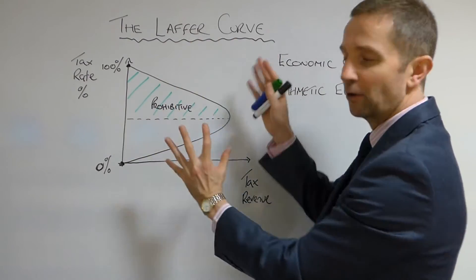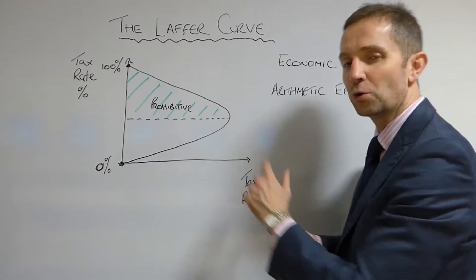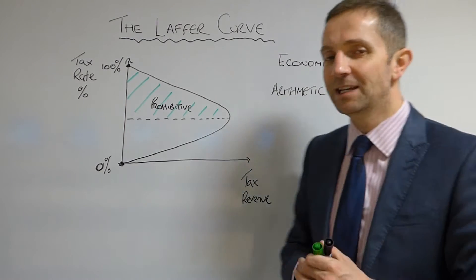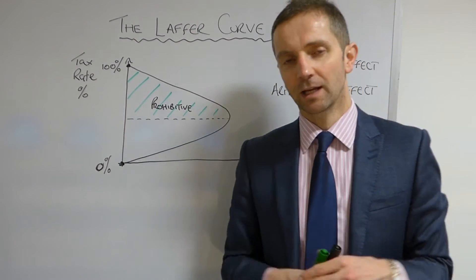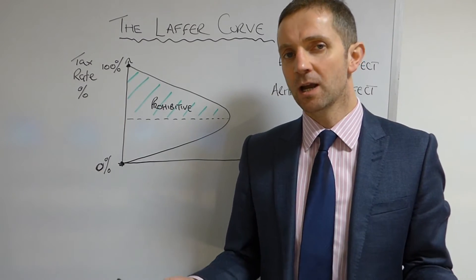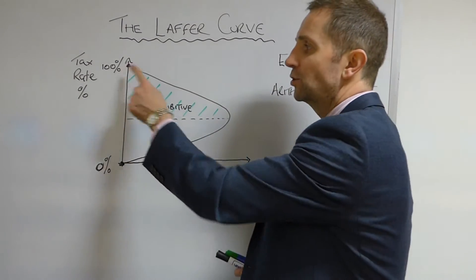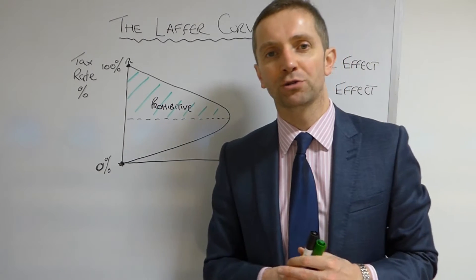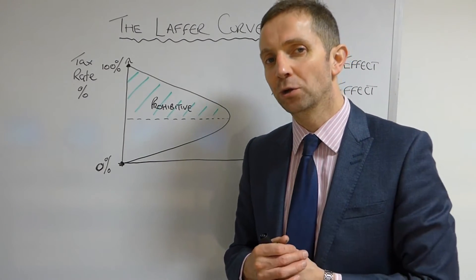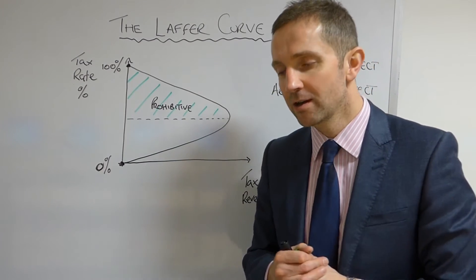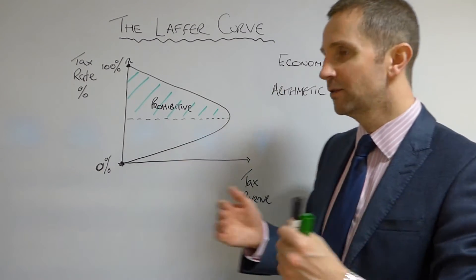As you can see, sometimes it's drawn vertically, sometimes horizontally. I think when you draw this way it's a little bit easier to interpret. So imagine the world, ladies and gentlemen, where the tax rate was 100%. What incentive would that provide you to go to work?